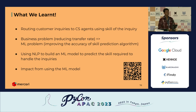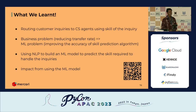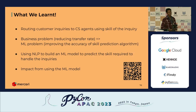Question about A/B test blinding: the test doesn't directly affect users — inquiries are assigned to CS agents in the background and agents don't know which algorithm is running. Individual agents were not told, though team members knew testing was happening. The questioner raised the scientific standard of double-blind testing where no one knows which model is being tested on which days.